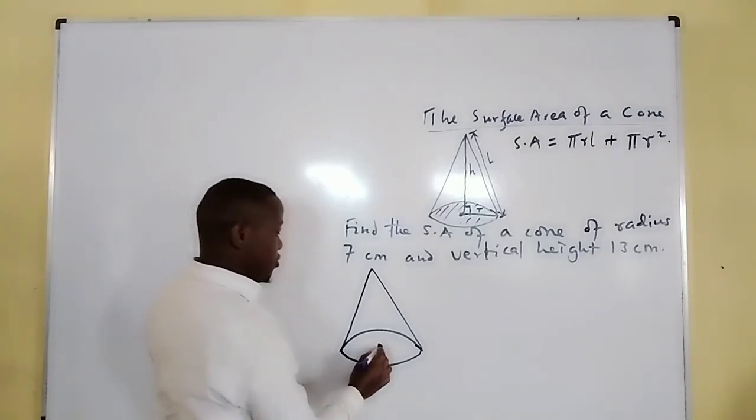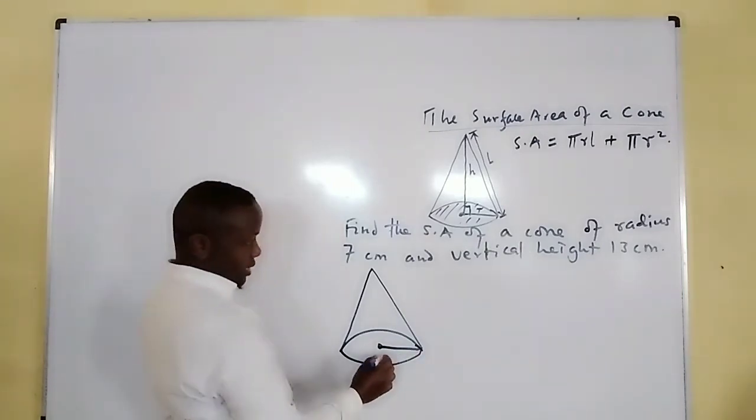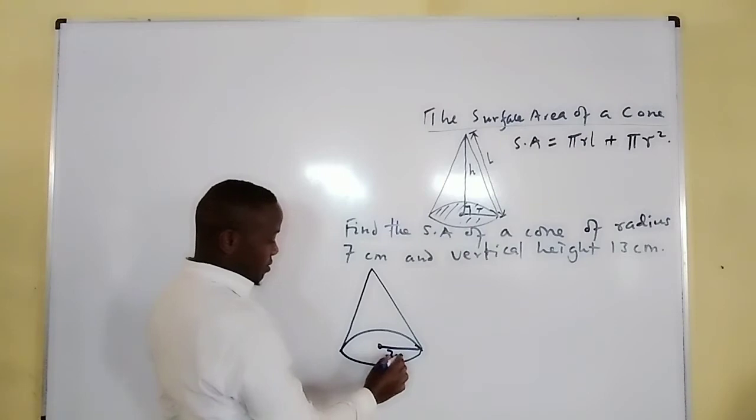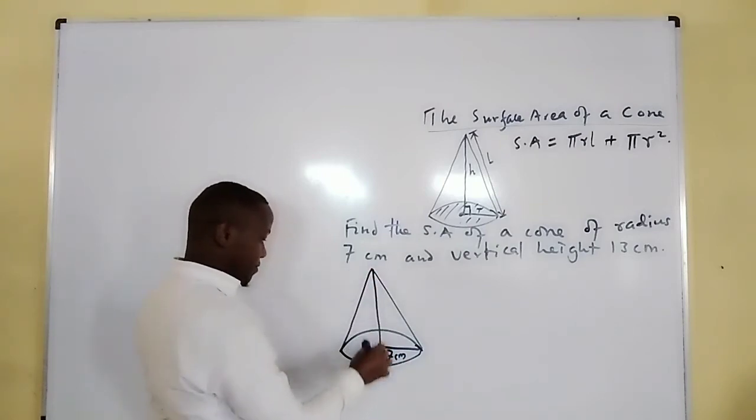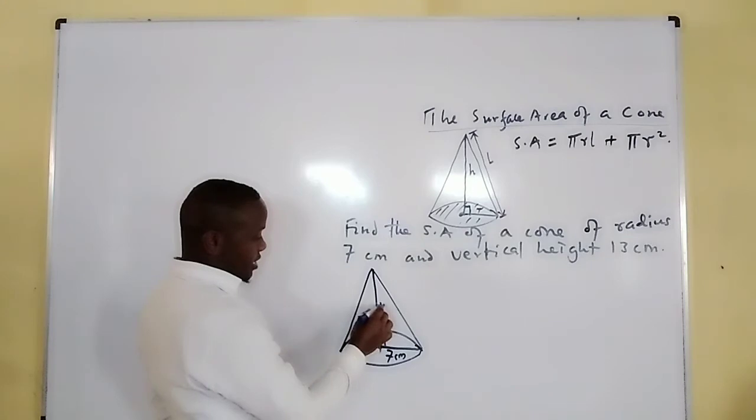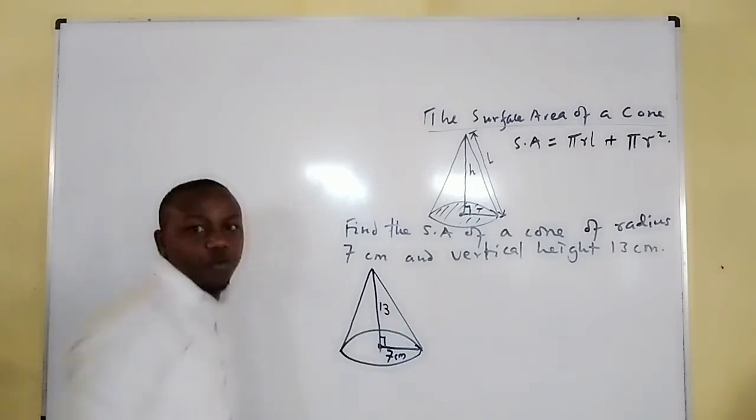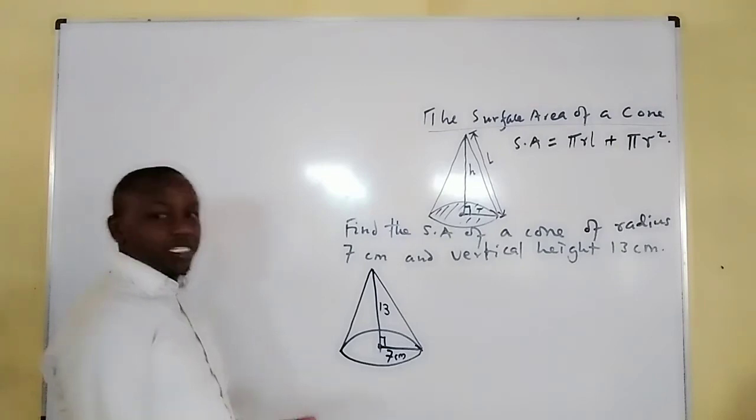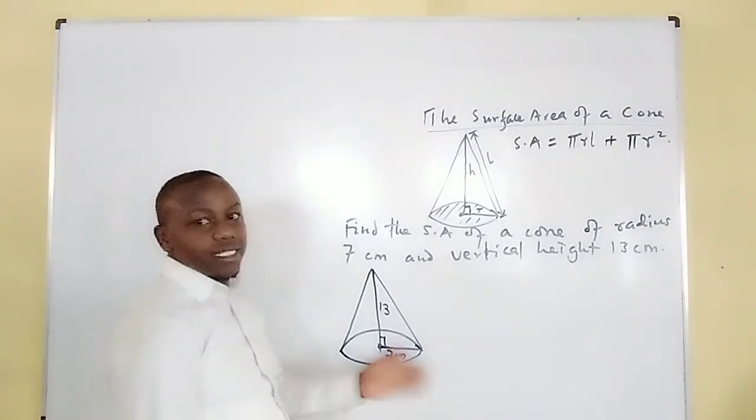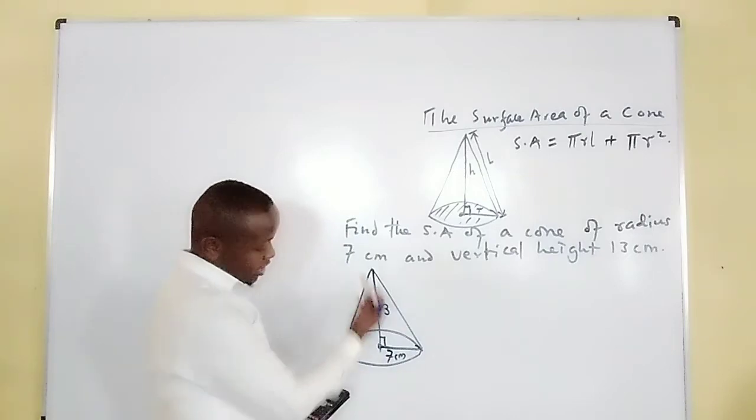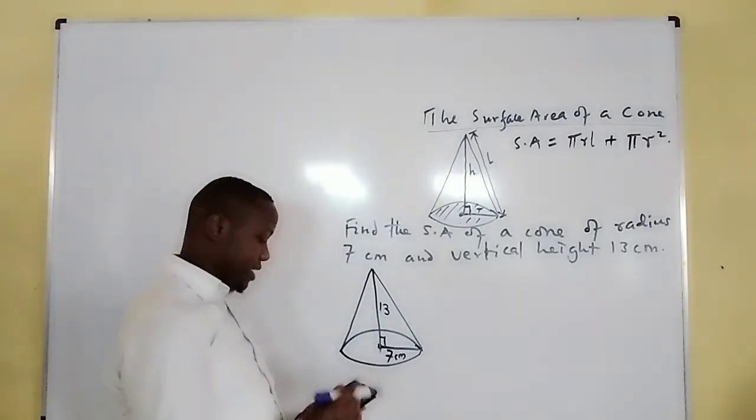We have the bottom radius of 7 centimeters, then the vertical height of 13 centimeters. So with the vertical height as 13 centimeters, it means we can calculate the sloping height...